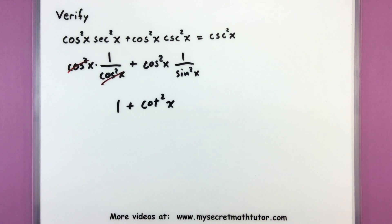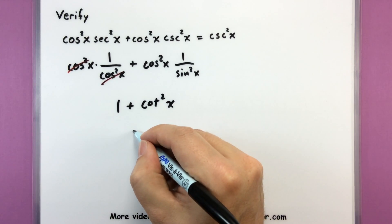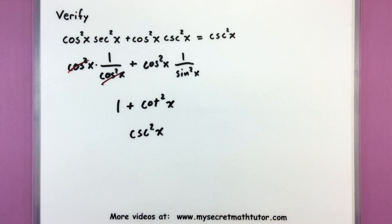But wait a minute. Looks like we have a Pythagorean identity here. I can go ahead and swap this out for cosecant squared x, which is exactly what the right side is.